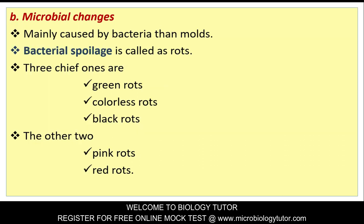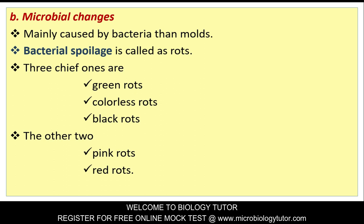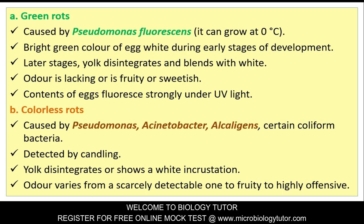Microbial changes: Mainly caused by bacteria rather than molds. Bacterial spoilage is called rots. The three chief rots are green rot, colorless rot, and black rot. The other two are pink rot and red rot. Green rot is caused by Pseudomonas fluorescens - it can grow at 0 degrees Celsius.